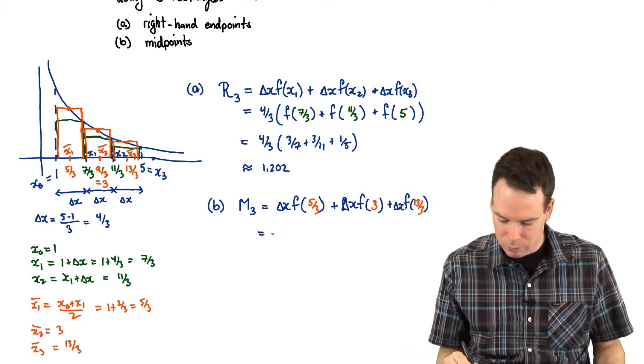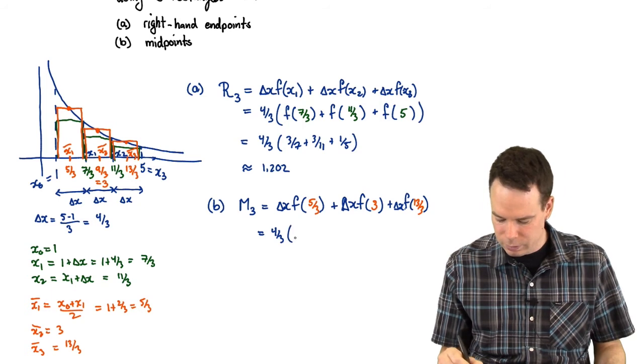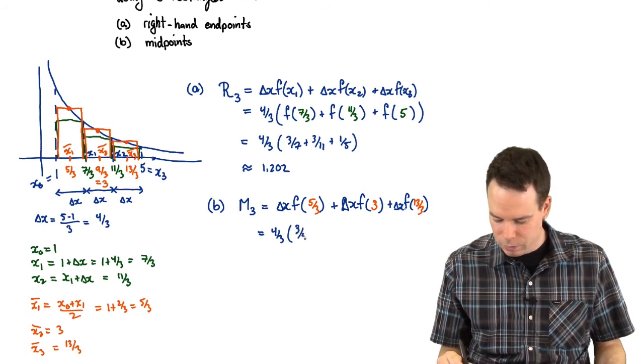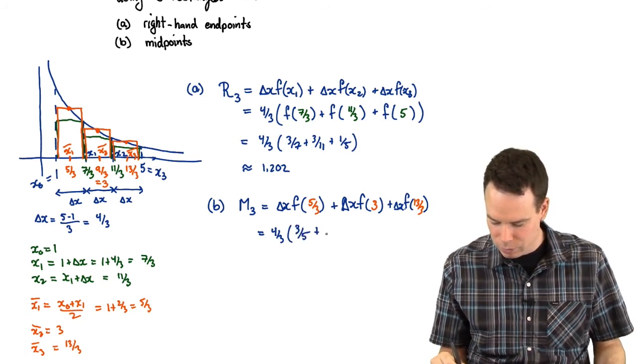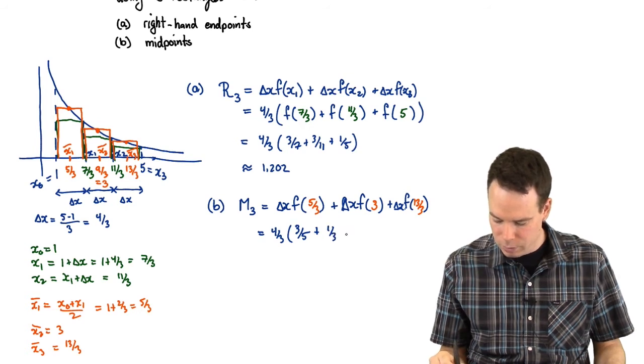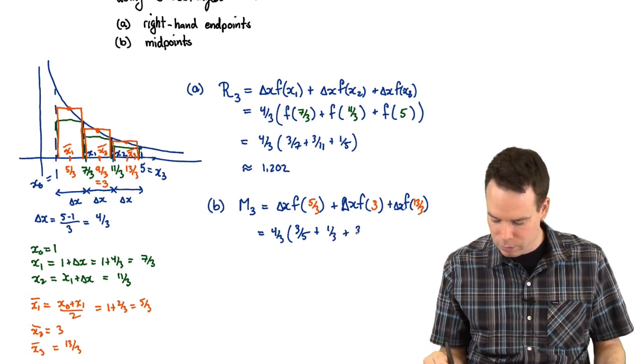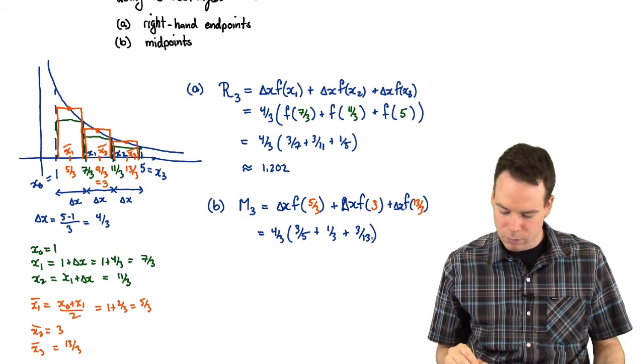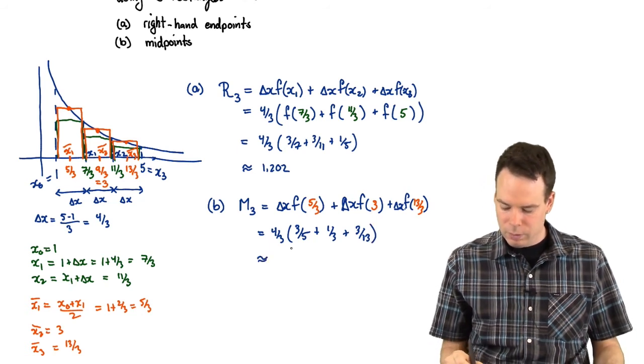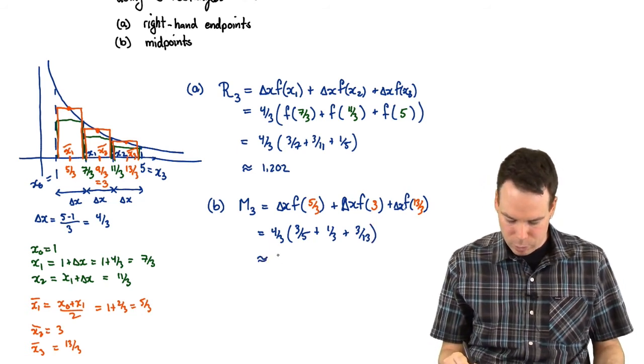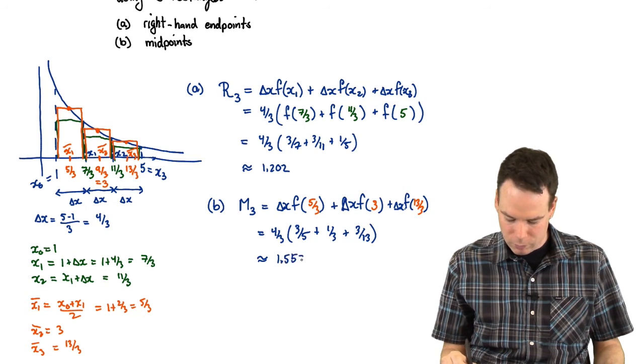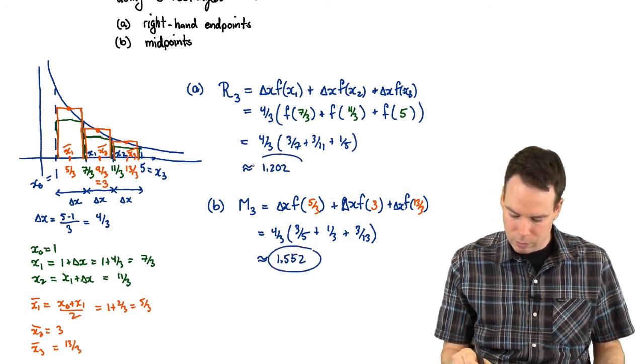Now we can work out those values. It's 4 thirds, it's delta x. f of 5 thirds is 3 fifths. F is the reciprocal function, remember. f of 3 is 1 third, and f of 13 thirds, that's 3 over 13. And adding those things up, this is approximately 1.552. And so there are our values.